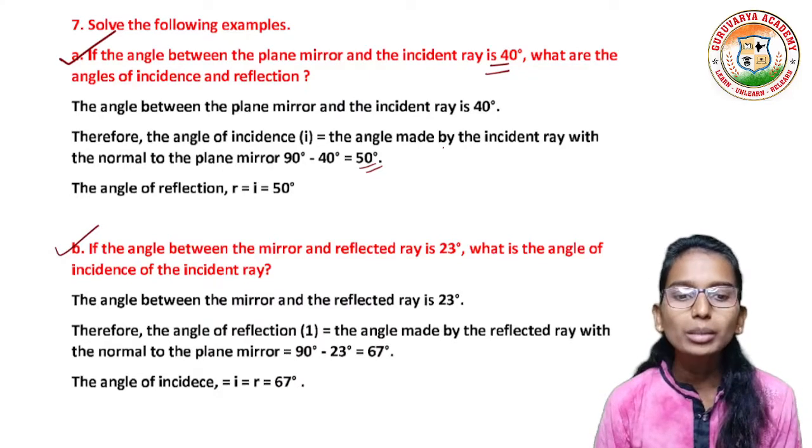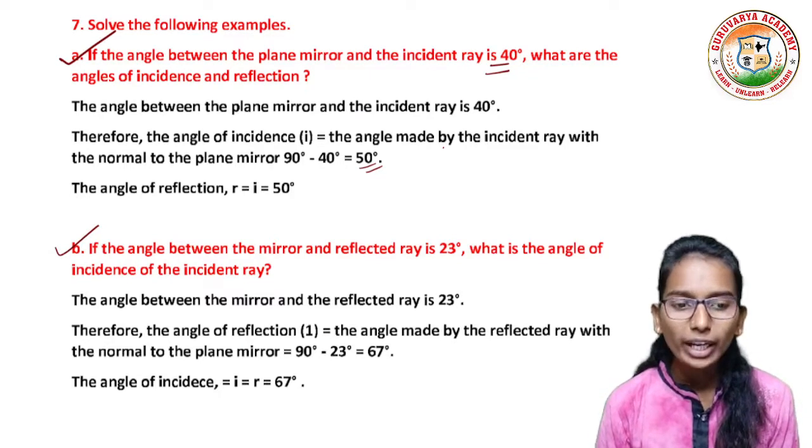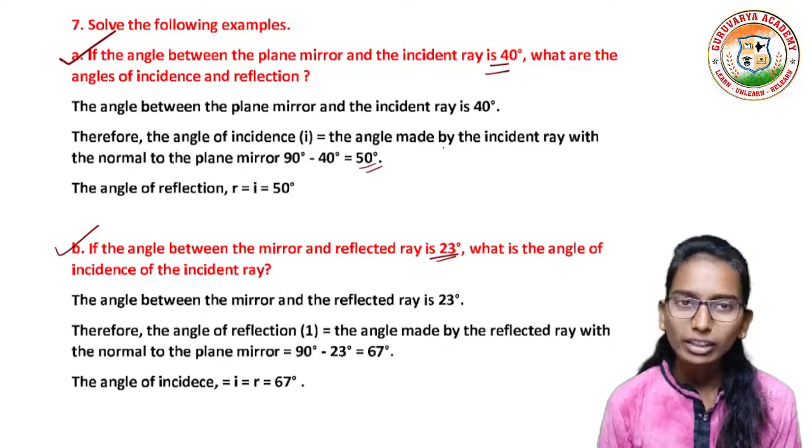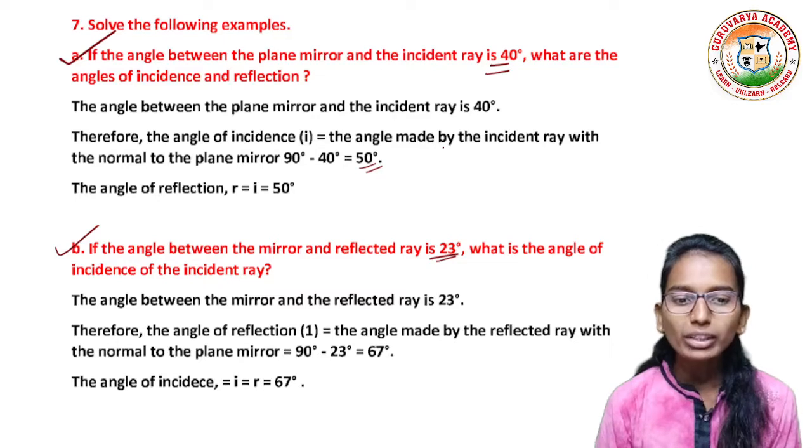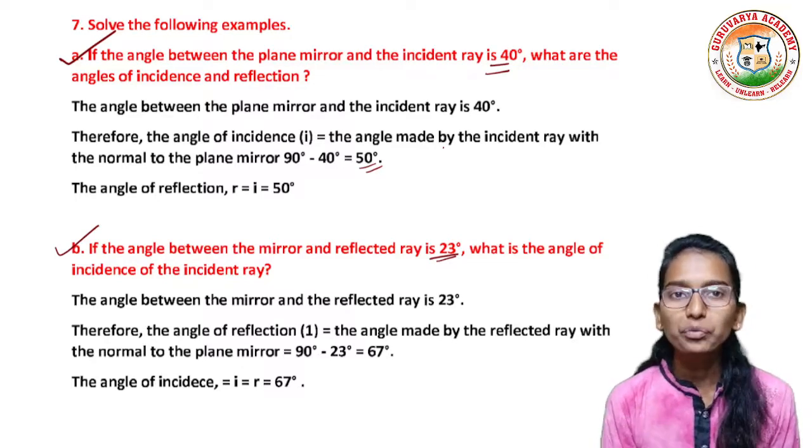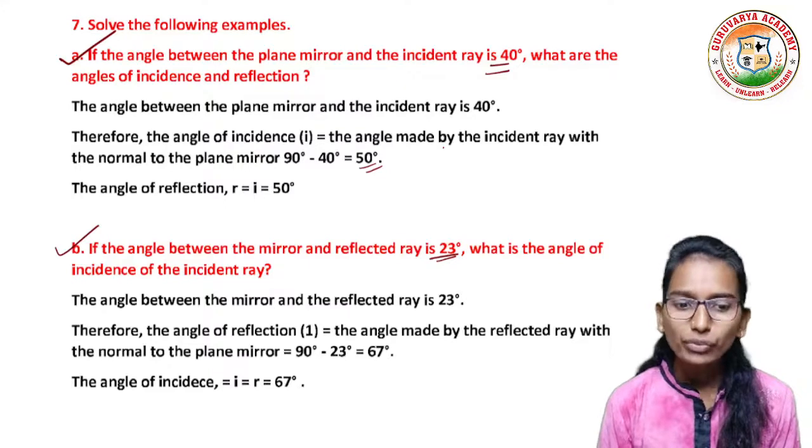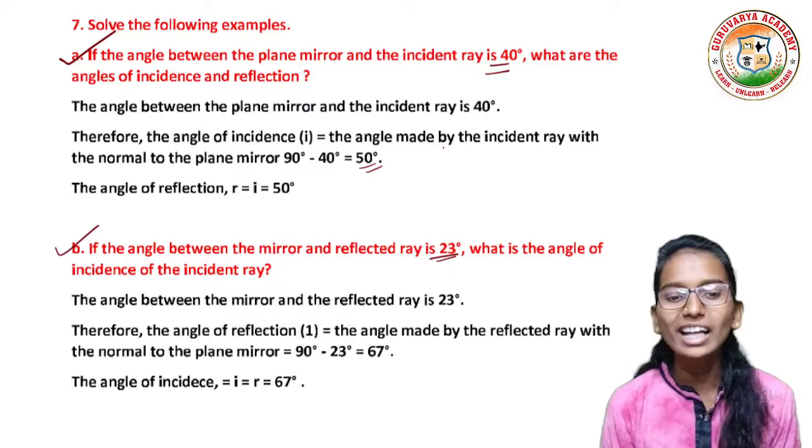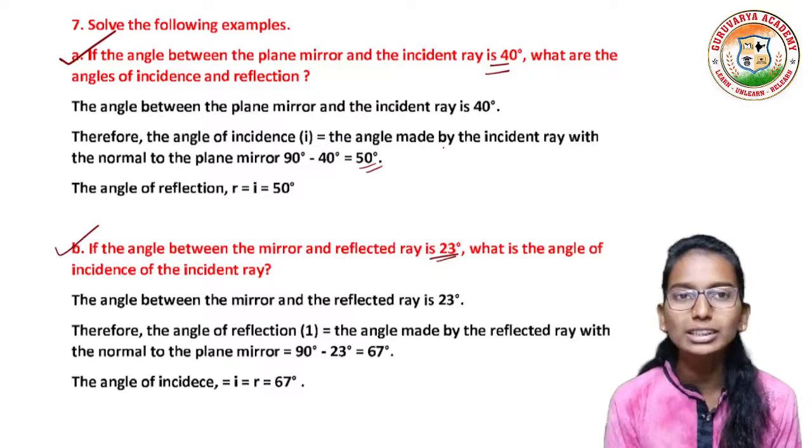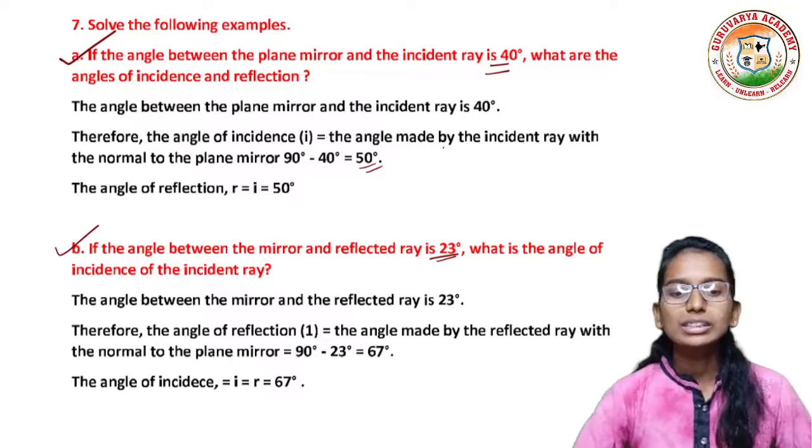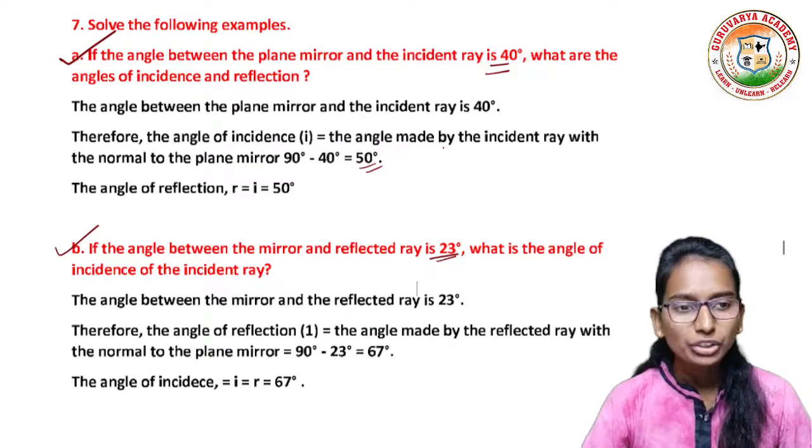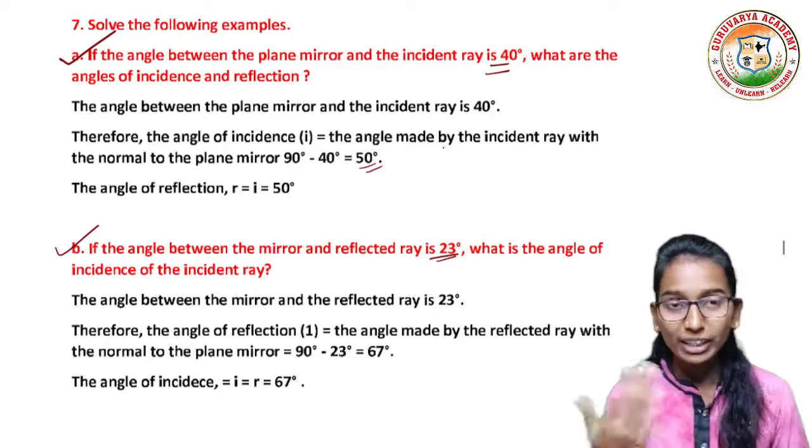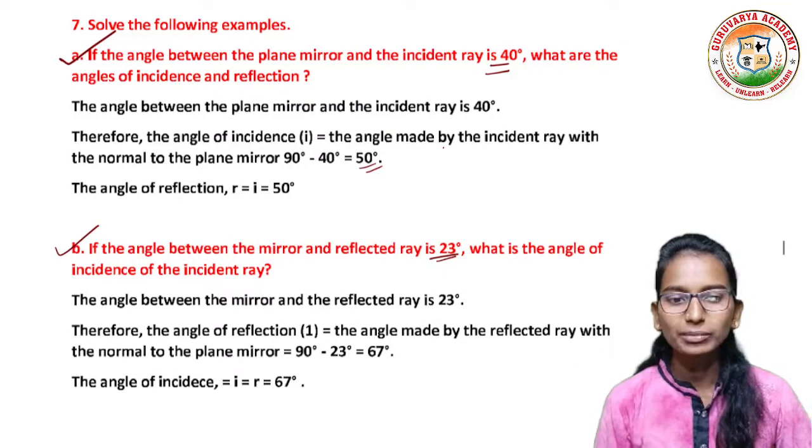Next part B: if the angle between the mirror and reflected ray is 23 degrees, what is the angle of incidence of the incident ray? Answer: the angle between the mirror and reflected ray is 23 degrees. Therefore, the angle of reflection is equal to the angle made by the reflected ray with the normal to the plane mirror, that is 90 minus 23, that is equal to 67 degrees. And the angle of incidence is equal to the angle of reflection, that is equal to 67 degrees.